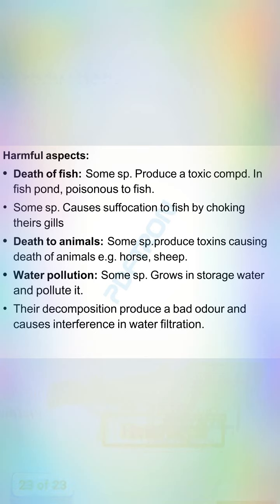Harmful aspects of cyanobacteria include being fatal to animals and causing water pollution. Some species produce toxic compounds in food that are poisonous to fish; others cause suffocation to fish by clogging their gills. Some species produce toxins causing death to animals. Certain species grow in stored water, polluting it; during decomposition they produce a foul odor and cause interference with water filtration.